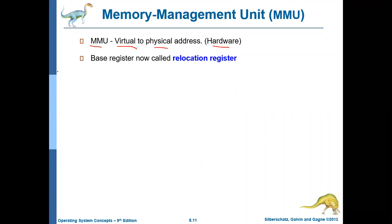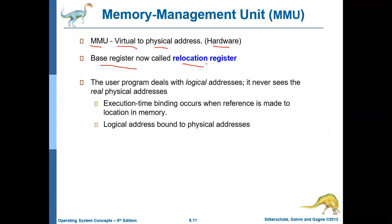For this particular process, the base register will be called the relocation register. For mapping virtual address to physical address, we use the base register, but in this context the base register will be used as the relocation register. The user program, as we already mentioned, deals with only logical address — it never sees the physical address.